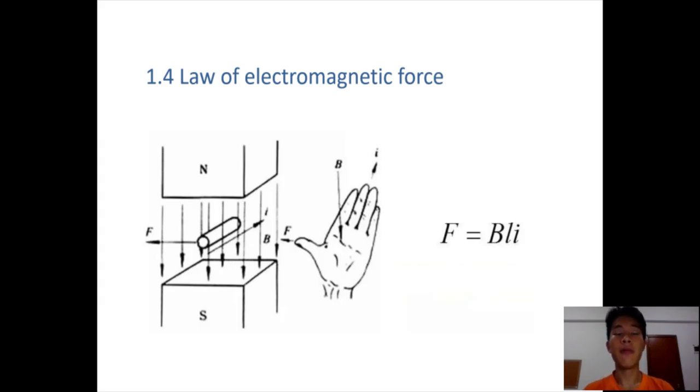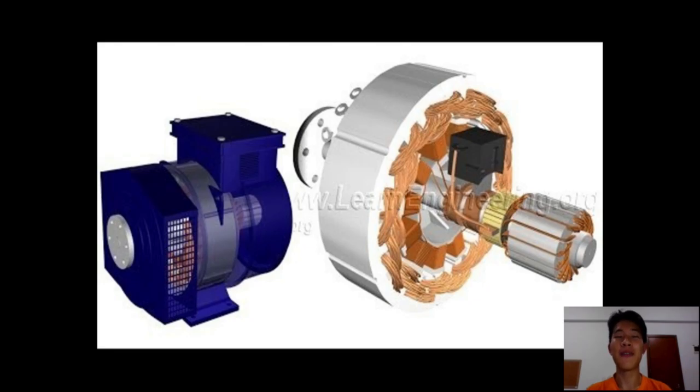For the fourth part, we are going to talk about the law of electromagnetic force. Current carrying conductors must receive force in the magnetic field. We can analyze the direction of the force by putting our left hand out. Let the magnetic induction line go through our hands from the palm to the back, and let the fingers except the thumb point to the moving direction of the conductor. So now the thumb will be pointing to the direction of the magnetic field force.